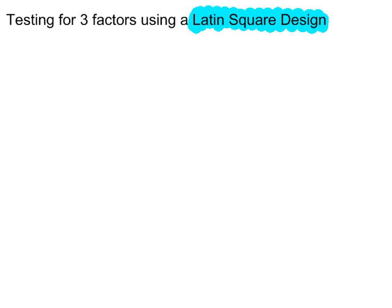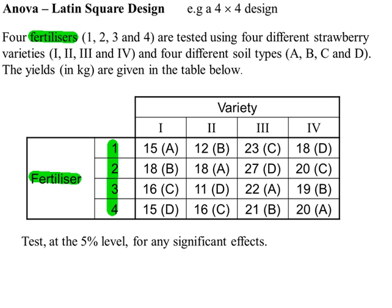Testing for three factors using a Latin square design. In this example we have three factors: fertilizers, varieties, and soil types.